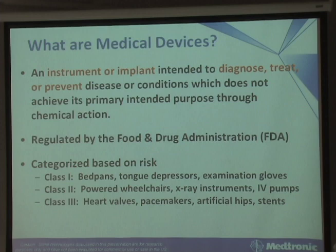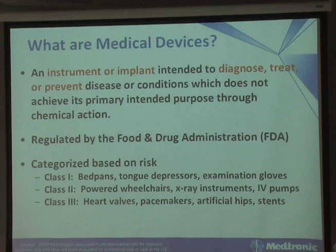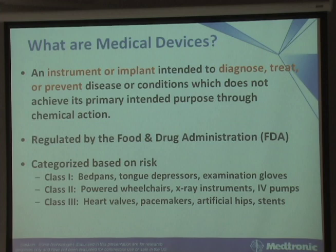Class one is very common — anything from a tongue depressor to a latex examination glove. Class two is a little bit higher risk in terms of how it interacts with patients: x-ray instruments, IV pumps. If something goes wrong, there are probably some complications, but it's probably not life threatening. What most people think about are class three devices — implantable heart valves, pacemakers, or artificial hips — where if something goes wrong or there's an infection, it's really life threatening.